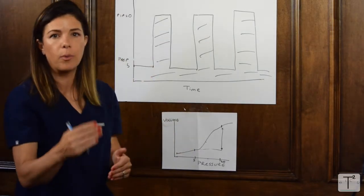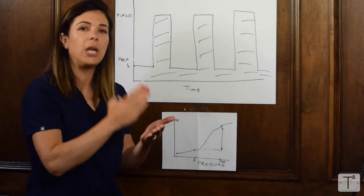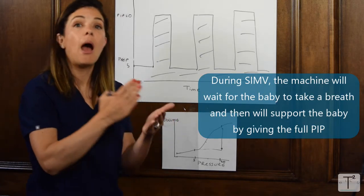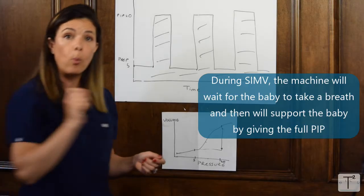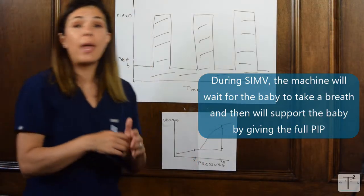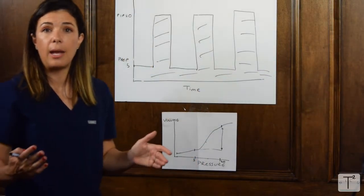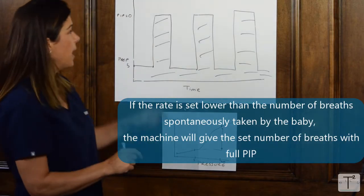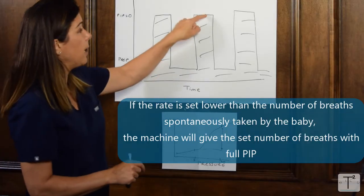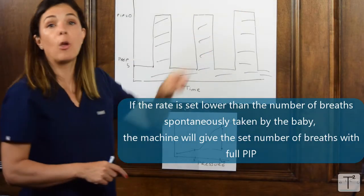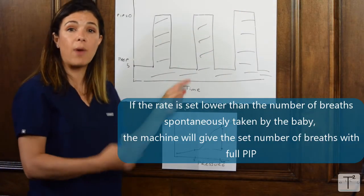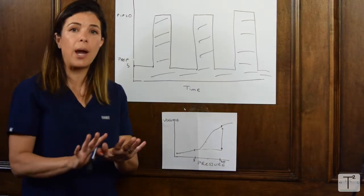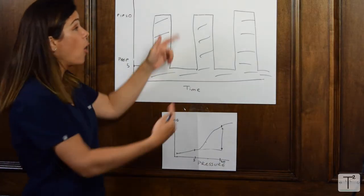Say you set the rate at 30, and the baby is breathing 40 times a minute. For 30 of those breaths, the machine is going to give the full PIP. So if you're breathing 40 times a minute, and the rate is 30, then there's 10 breaths, which the machine is not giving the PIP to.